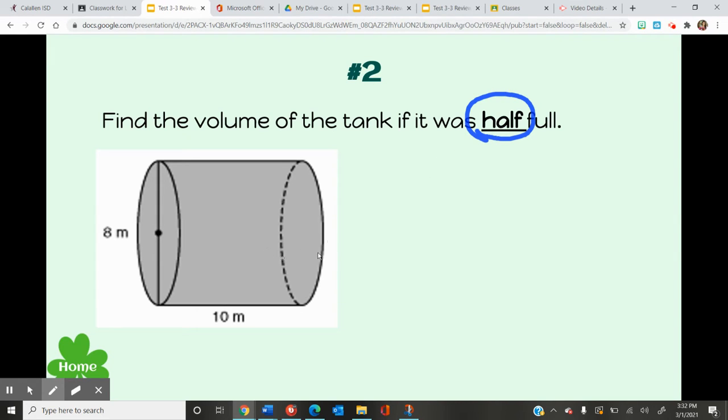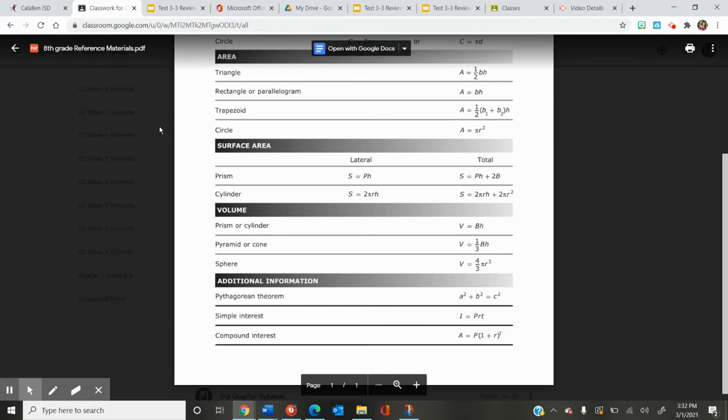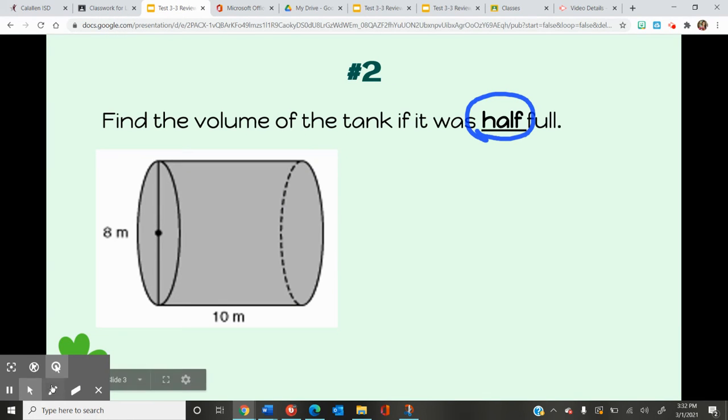So here this is a cylinder. First thing I'm going to do is go to my formula chart and find the volume for a cylinder. Volume of a prism or cylinder is V equals area of my base times my height. Now this capital B stands for area of my base, so I need to identify my base shape, which is a circle.